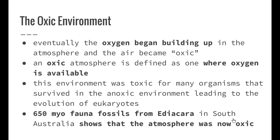Eventually oxygen began building up in the atmosphere and the air became oxic. An oxic environment is defined as one where oxygen is freely available. This environment was toxic for many organisms that survived in the anoxic environment, leading to the evolution of eukaryotes. Eukaryotes have a true nucleus and true membrane-bound organelles, and the simpler prokaryotic organisms that couldn't deal with increased oxygen died off, driving this shift to eukaryotic organisms.